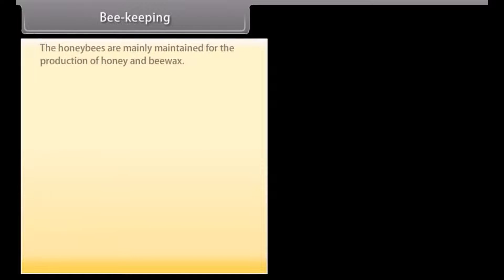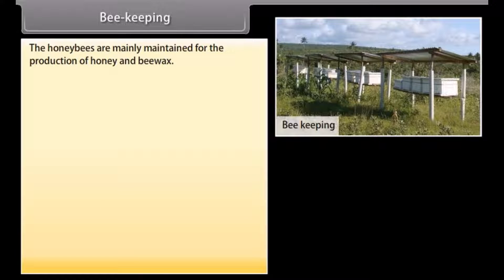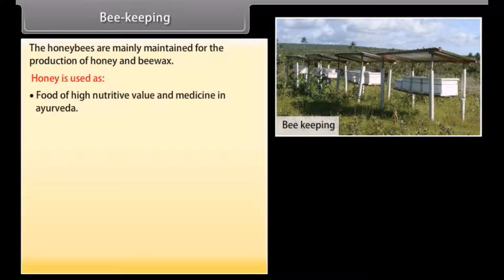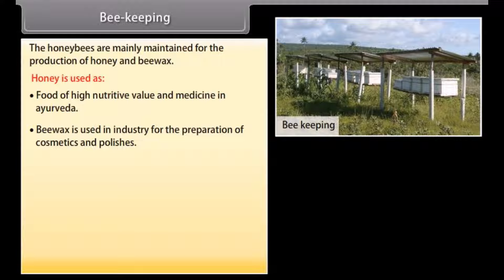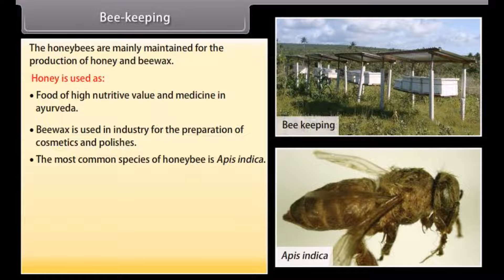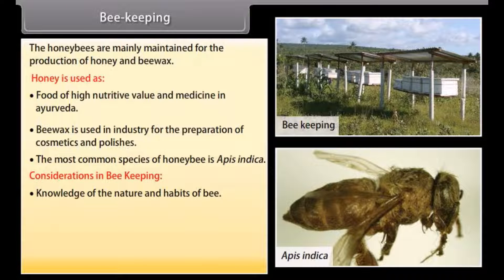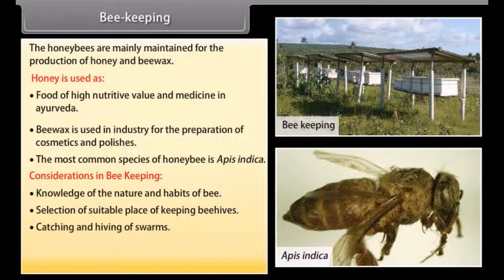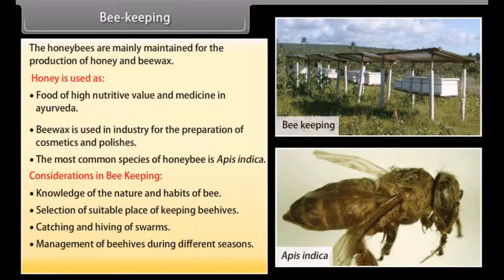Beekeeping: the honeybees are mainly maintained for the production of honey and bee wax. Honey is used as food of high nutritive value and as medicine in Ayurveda. Bee wax is used in industry for the preparation of cosmetics and polishes. The most common species of honey bee is Apis indica. Considerations in beekeeping include: knowledge of the nature and habits of bees, selection of suitable place for keeping beehives, catching and hiving of swarms, management of beehives during different seasons, and handling and collection of honey and bee wax.